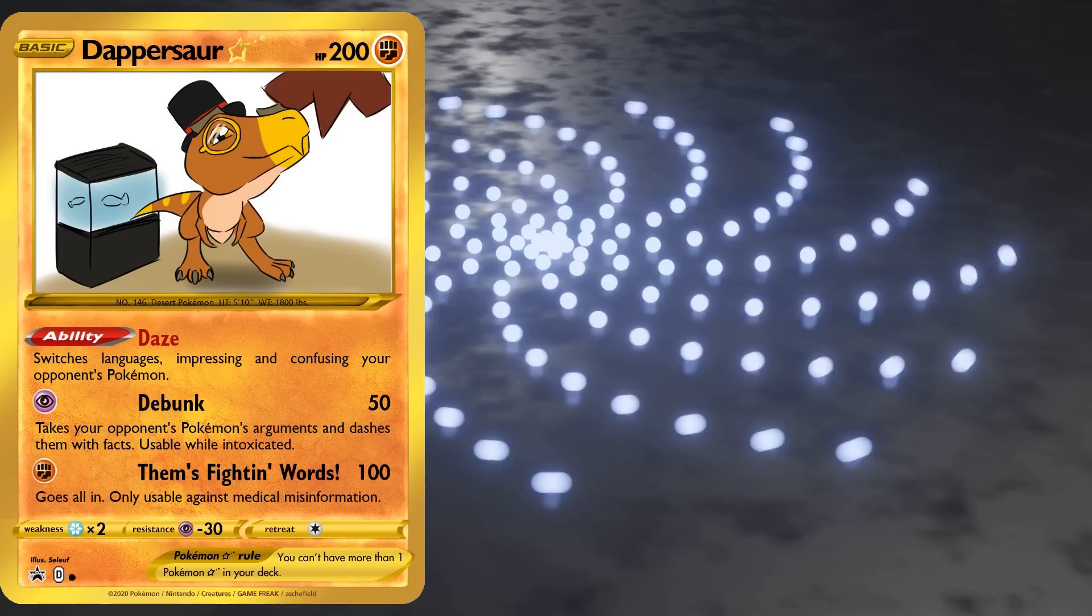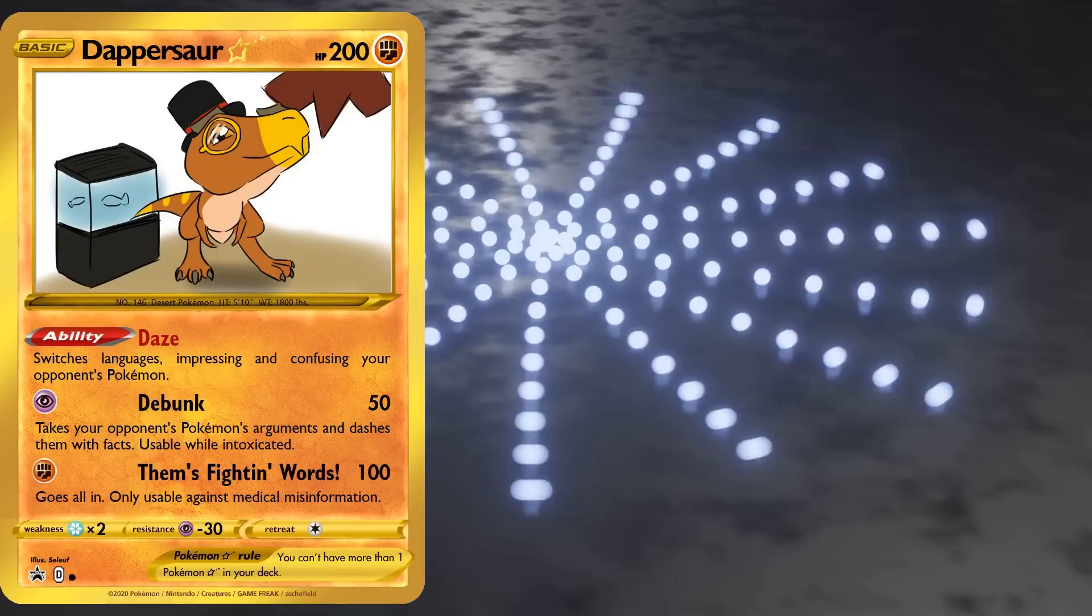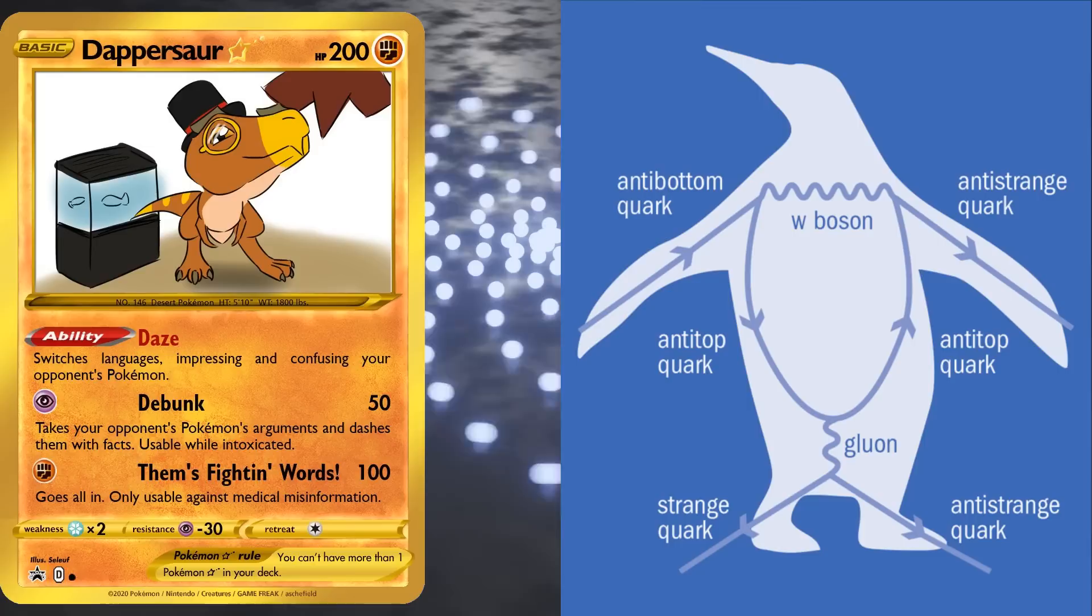Pro tip, the fact that scientists sometimes give things funny names doesn't make those things fake, lies, fabrications, or useless. Another fun fact, penguin diagrams are a particular group of Feynman diagrams which describe interactions that violate charge parity symmetry.